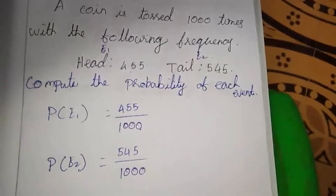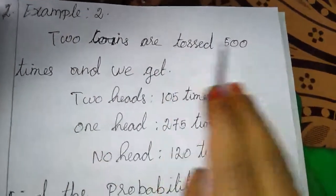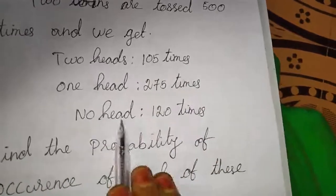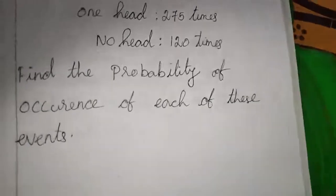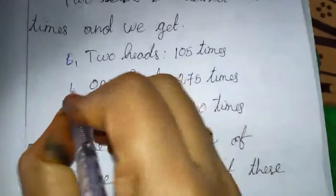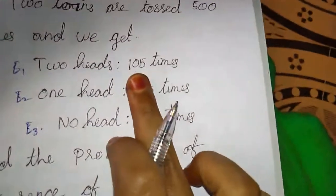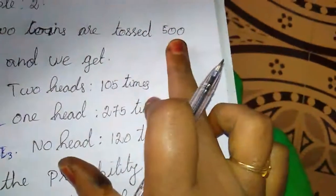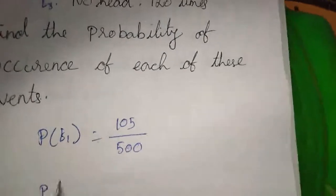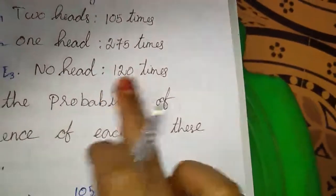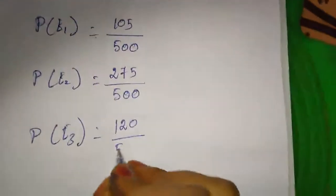Now we will move to Example 2. Two coins are tossed 500 times and we get: 2 heads 105 times, 1 head 275 times, no head 120 times. Find the probability of occurrence of each of these events. We take 2 heads as E1, 1 head as E2, no head as E3. P of E1 equals 105 divided by 500. P of E2 equals 275 divided by 500. P of E3 equals 120 divided by 500. This is the answer for this question.